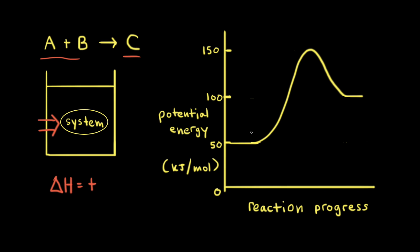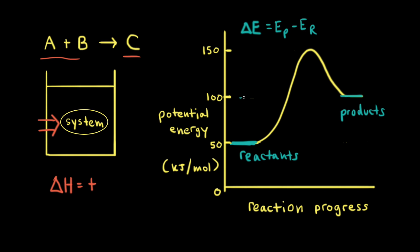When we look at the energy profile for an endothermic reaction, the energy of the reactants is lower than the energy of the products. So this time, if we find delta E, that would be the energy of our products minus the energy of our reactants. The energy of our products is about 100 kilojoules per mole and the energy of our reactants is about 50. So it's 100 minus 50, which would be positive 50 kilojoules per mole.